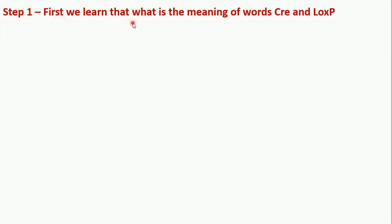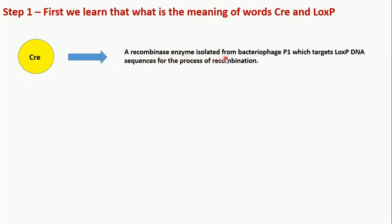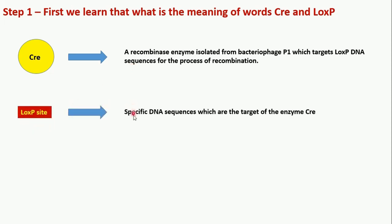In the first step we will learn the meaning of the words Cre and loxP. Cre is a recombinase enzyme which is isolated from bacteriophage P1. As it is an enzyme which works on DNA for recombination, it has specific target sequences, and those target sequences are called loxP DNA sequences. So Cre is a recombinase enzyme isolated from bacteriophage P1 which targets loxP DNA sequences for the process of recombination. LoxP sites are specific DNA sequences which are the target of the enzyme Cre — Cre is the enzyme and loxP is the target sequence for Cre.